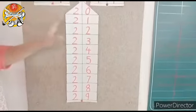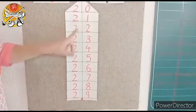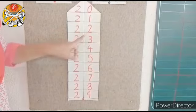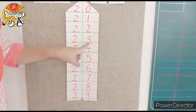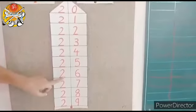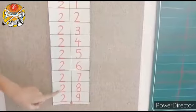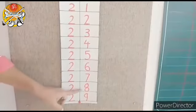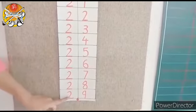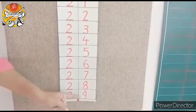Ok children, so let's revise house of 20. 21, 22, 23, 24, 25, 26, 27, 28, 29. And what comes after 29?